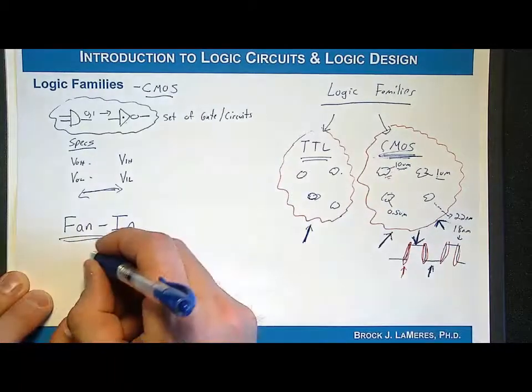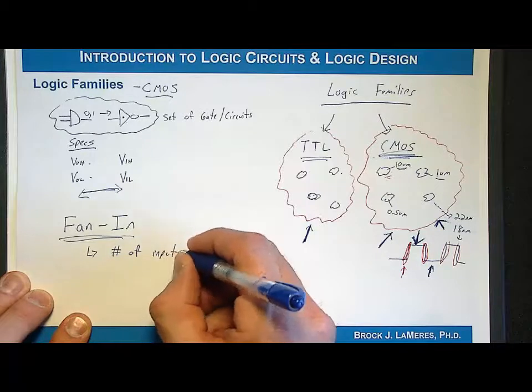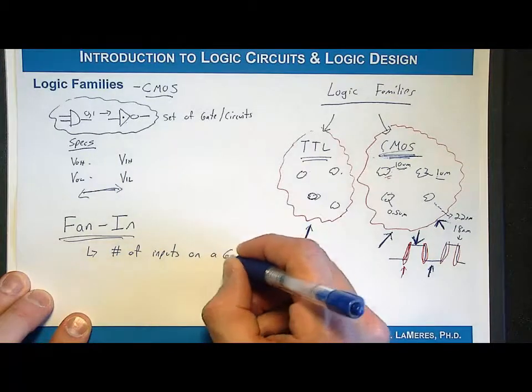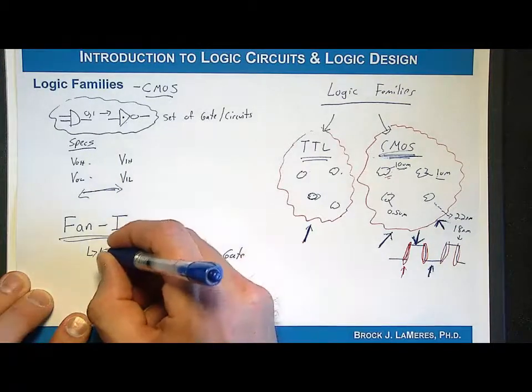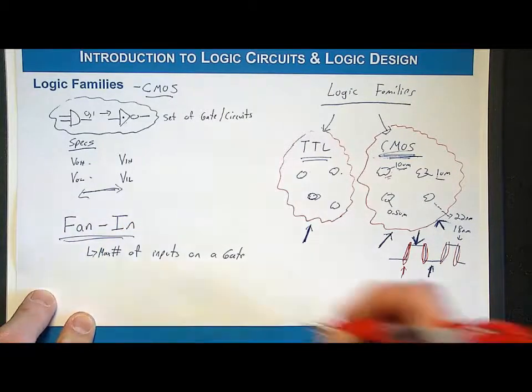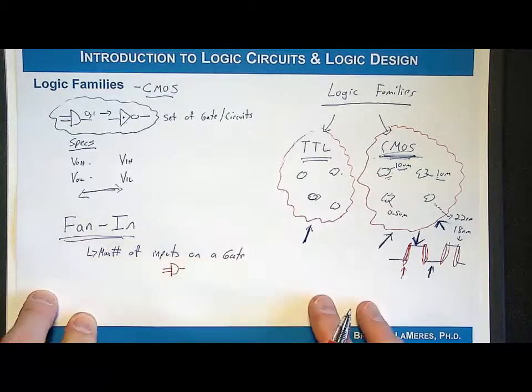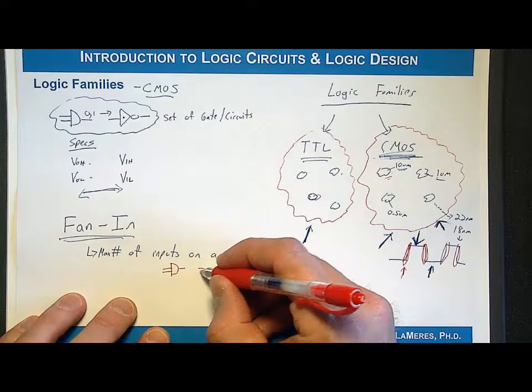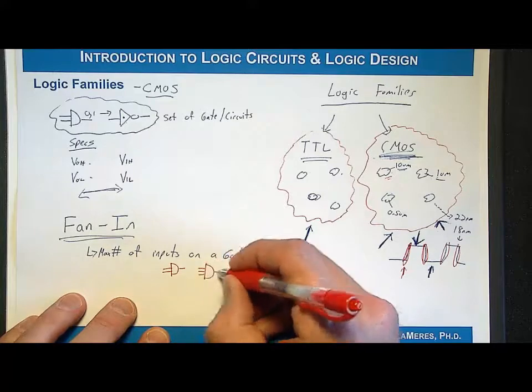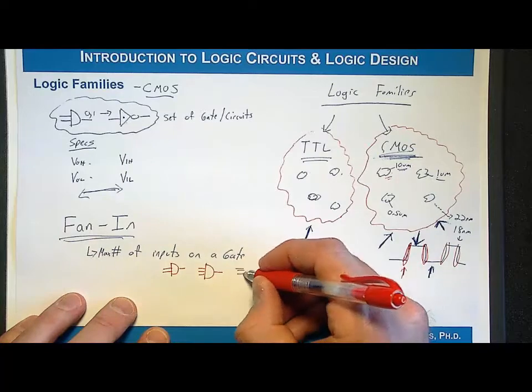Fan-in is associated with a particular logic family. Fan-in is the number of inputs on a gate—actually the max number of inputs on a gate. If I had an AND gate, we talked about a two-input AND gate. We might also have a three-input AND gate in that same logic family. Then you need a four-input AND gate.